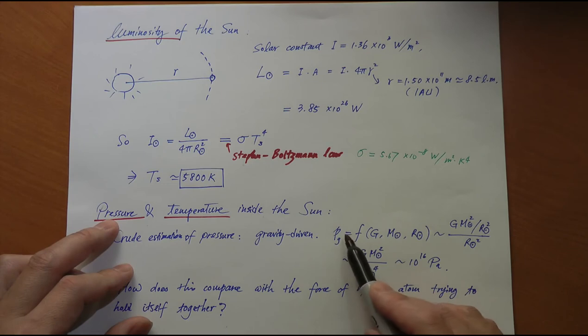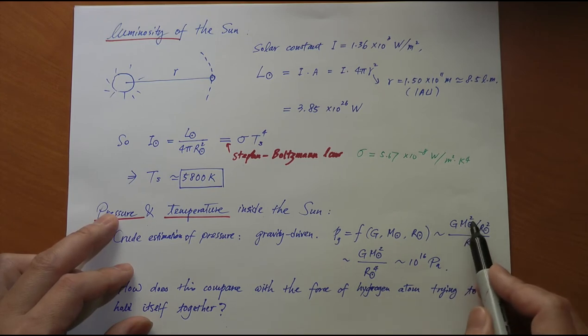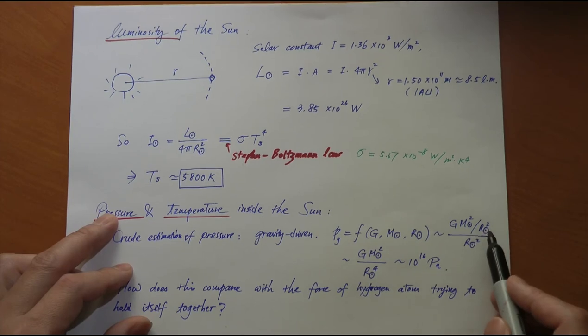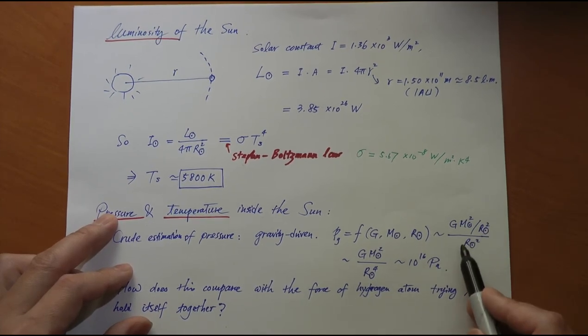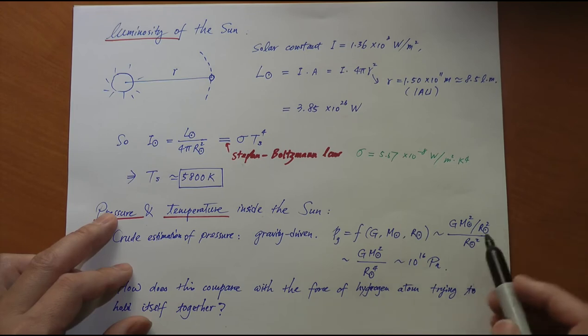Pressure is force over area. Force, using Newton's law of universal gravitation, G times mass of the star squared over radius squared, that gives you force, divided by surface area, 4πr^2, or just r^2. So looking at this expression, if you ignore all these constants...